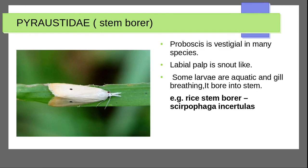Pyralidae — proboscis is well developed in many species; labial palps are not reduced. Some larvae are aquatic and gill-breathing. They are stem borers. Example: Scirpophaga incertulas.